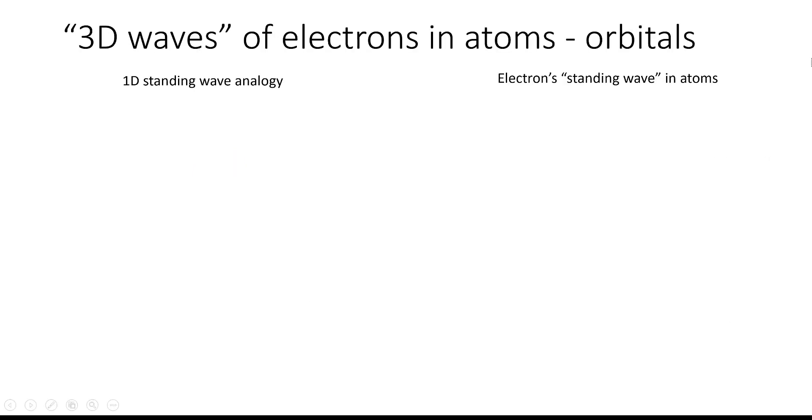Now these three-dimensional electron waves that we get from the Schrodinger equation are the orbitals that we're familiar with. So let's compare the one-dimensional wave analogy to the atomic orbitals. The first one that we looked at, the one that does not have any nodes, is analogous to the 1s orbital. And the 1s orbital also does not have any nodes.